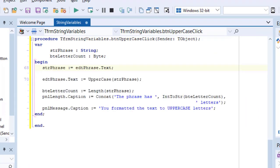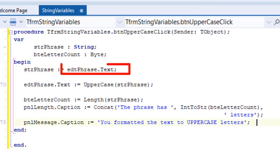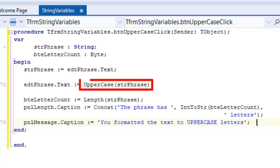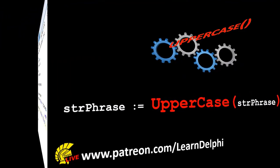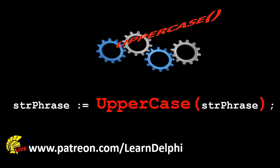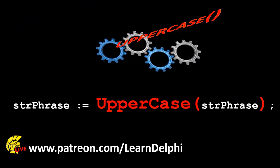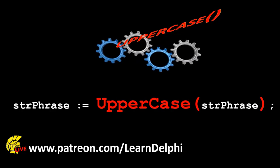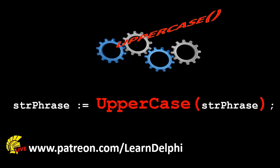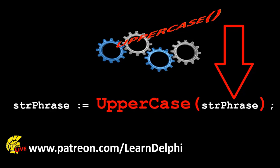Go between the begin and end statements and type these two lines of code. I assign the value in the text property of edtPhrase to the string variable named strPhrase. Then on the next line, I read the value just saved in strPhrase and convert it to uppercase letters. The UpperCase function is used to return the characters in the string variable to uppercase letters. The UpperCase function takes a string as input between the two brackets. Here I show the UpperCase function — we pass a string named strPhrase as an argument to the UpperCase function's input parameter.